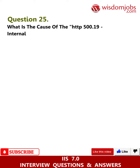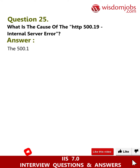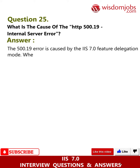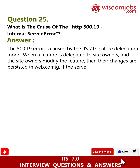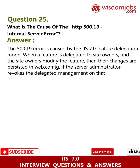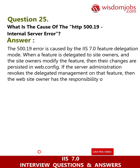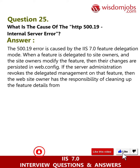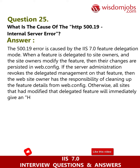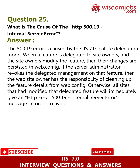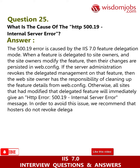Question 25: What is the cause of the HTTP 500.19 internal server error? Answer: The 500.19 error is caused by the IIS 7.0 feature delegation mode. When a feature is delegated to site owners and they modify the feature, their changes are persisted in web.config. If the server administrator revokes the delegated management on that feature, the website owner has the responsibility of cleaning up the feature details from web.config; otherwise all sites that had modified that delegated feature will immediately give an HTTP 500.19 error.